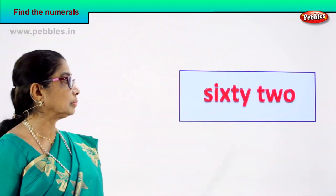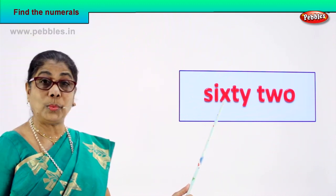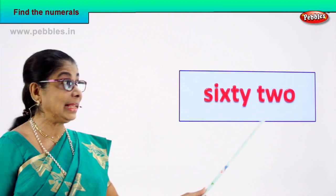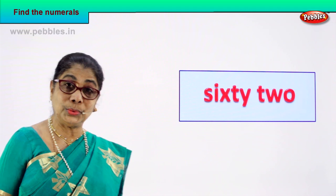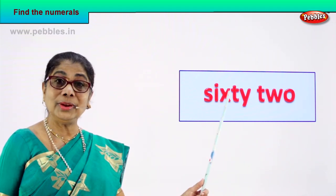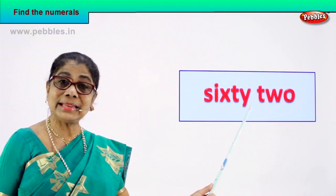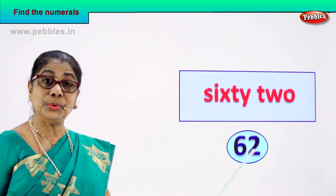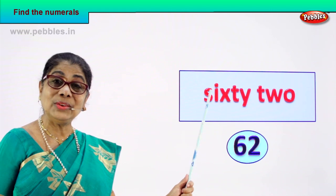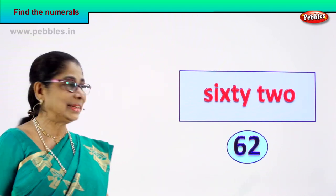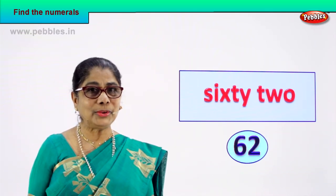Shall we take our first number name? Good. Look what we have here. Read aloud: S-I-X-T-Y, sixty, T-W-O, two — 62. You learn to read 62. Good. So what can be the numeral? 6 and 2 — 62. Good. So you are learning to identify and read. 62 is the numeral for this number name.